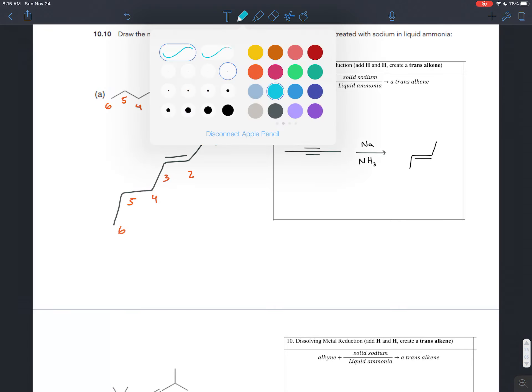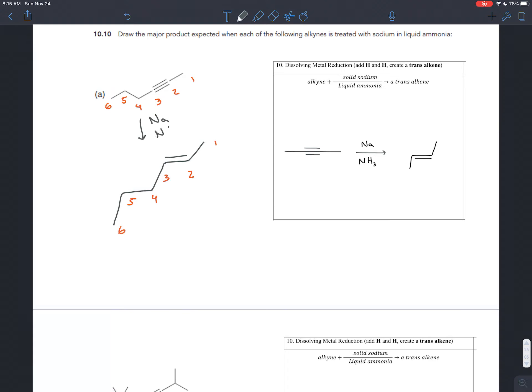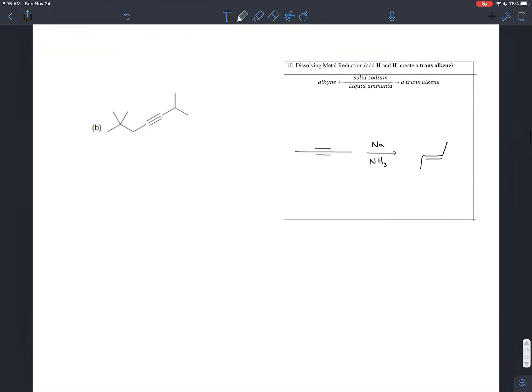And so if you treat that alkyne with sodium metal in liquid ammonia, what you'll get is this trans alkene here. It would be trans-2-hexene. So if you have 2-hexyne and you treat it with sodium in liquid ammonia, you get trans-2-hexene.